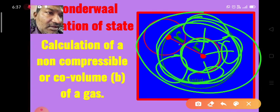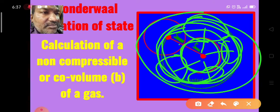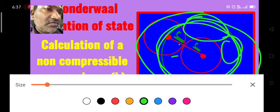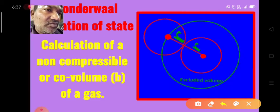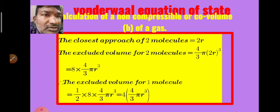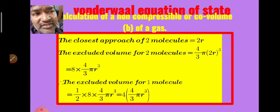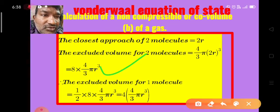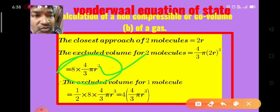The volume of the effective sphere is calculated using radius 2r. The excluded volume for one pair of molecules is 4/3 π(2r)³, which simplifies to 8 × (4/3 πr³). The excluded volume per molecule is therefore (1/2) × 8 × (4/3 πr³) = 4 × (4/3 πr³). Since 4/3 πr³ is the volume of one sphere (one molecule), the excluded volume for one molecule equals 4 times the actual volume of that molecule.